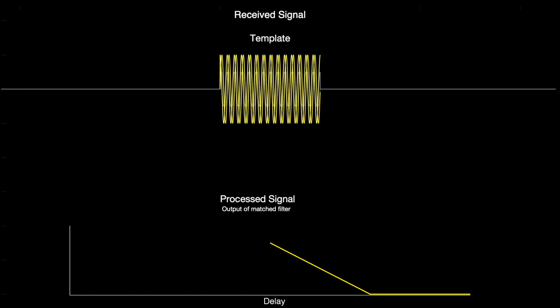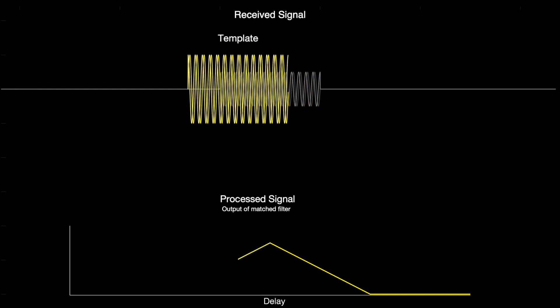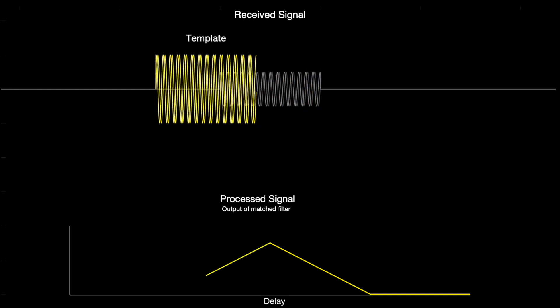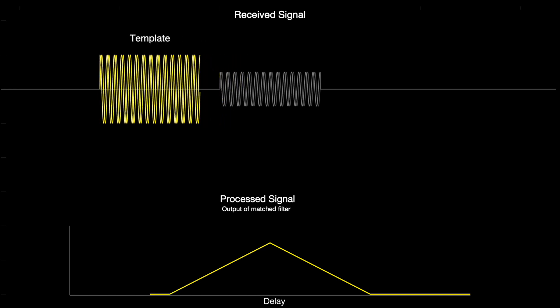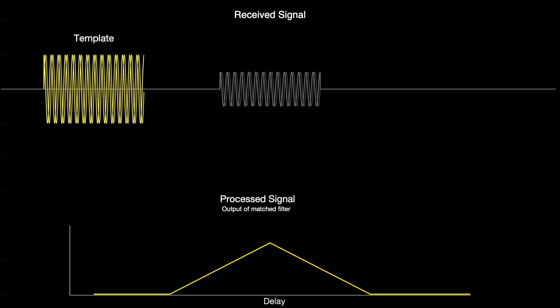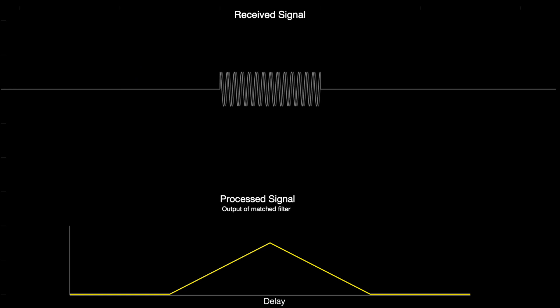And at this point, it's the most correlated since they essentially line right up with each other. And then as the pulse passes, its correlation with the template begins to drop again, until we're completely out of the pulse. So now we have a processed signal. And what we end up with is a signal that's more like a triangle than the rectangle that we started with.